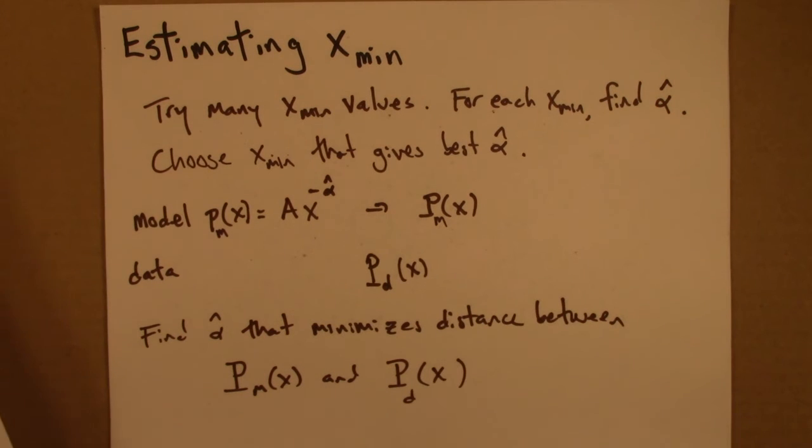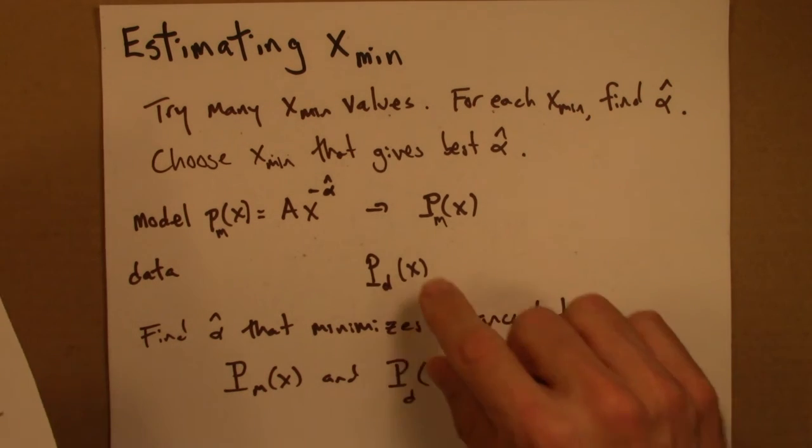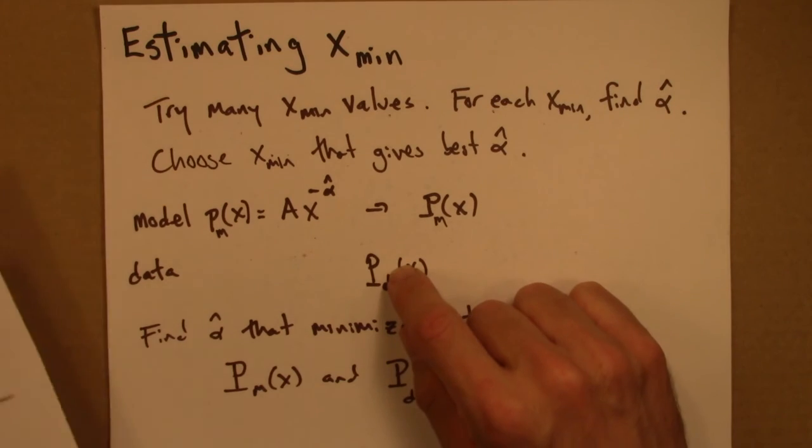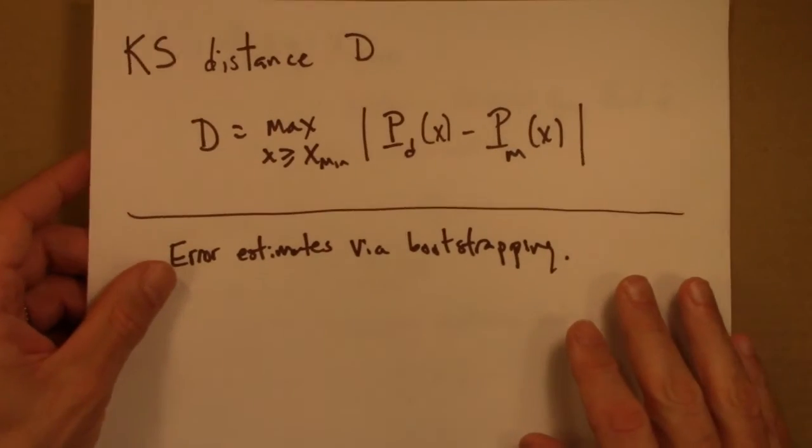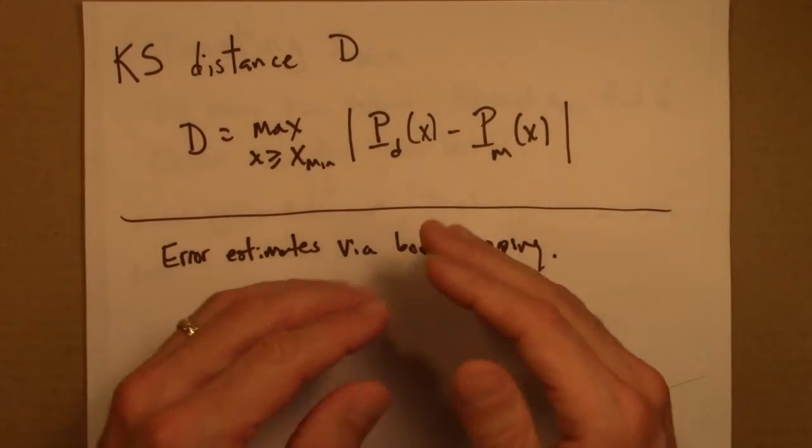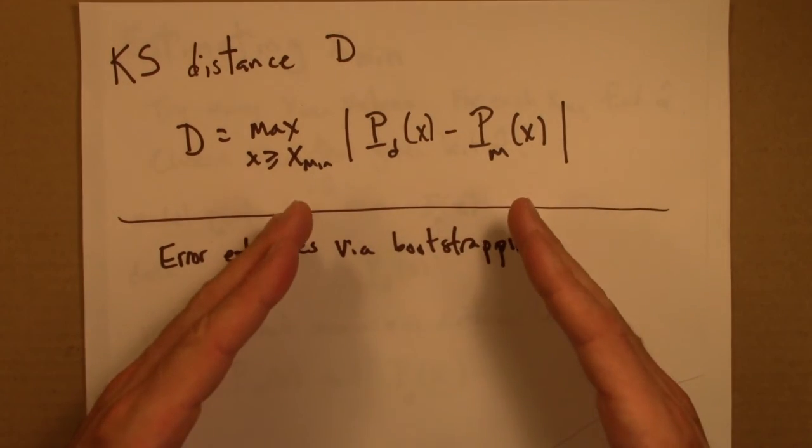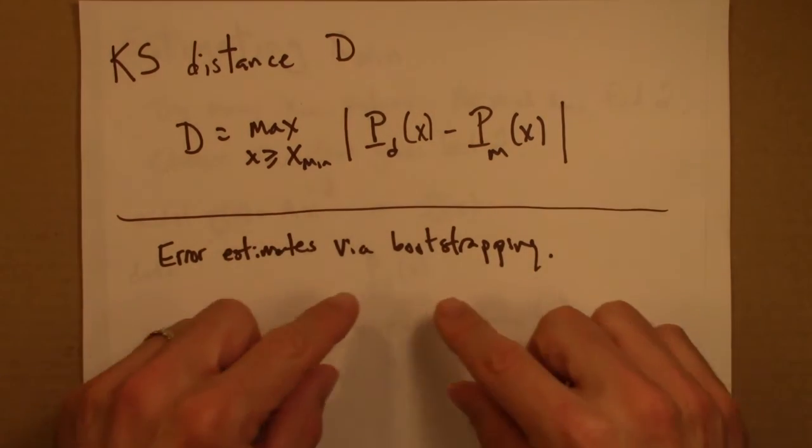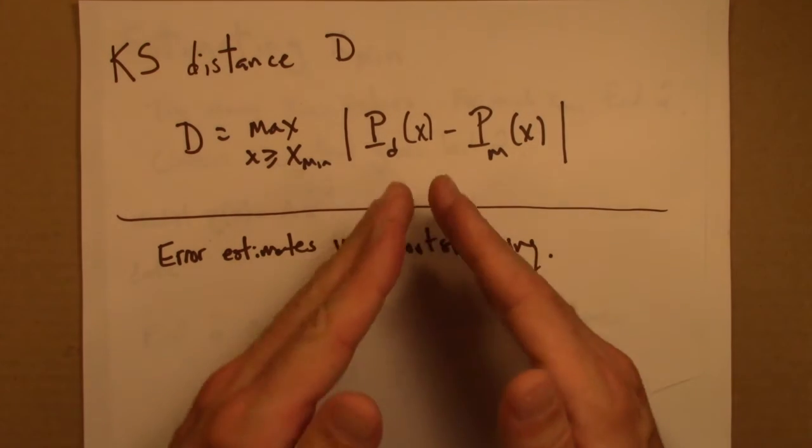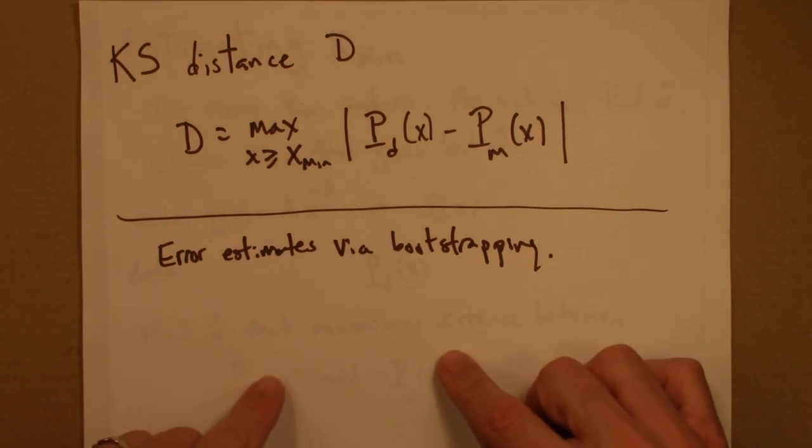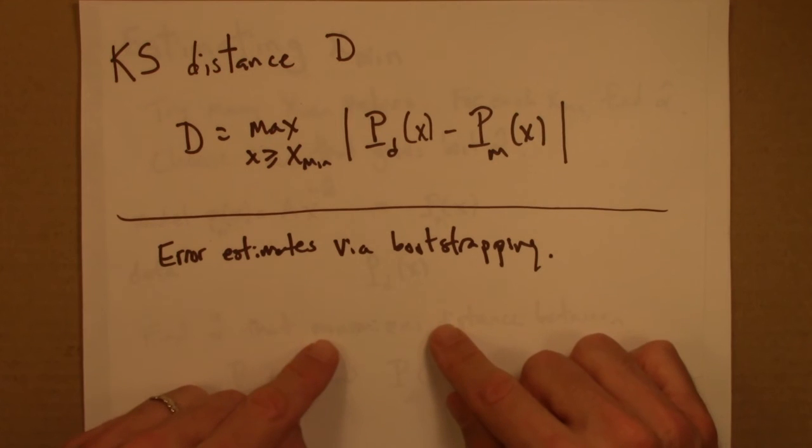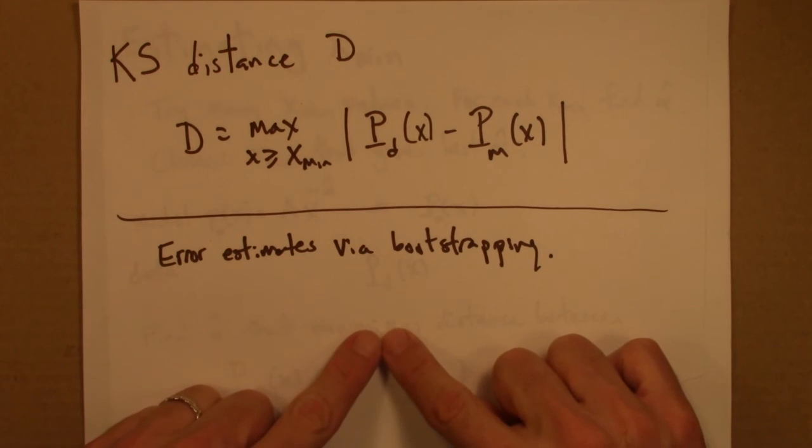Do that 100, 1000, 10,000 times, obviously on a computer. And then you'll get a whole range of xmin values. And depending on how spread out those xmin values are... The more spread out those xmin values are, the greater the uncertainty in xmin.